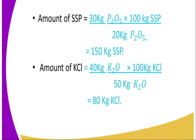To determine the amount of single superphosphate, take 30 kg of phosphorus pentoxide, multiply by 100 kg of single superphosphate fertilizer, then divide by 20 kg of phosphorus pentoxide — giving an answer of 150 kg of single superphosphate fertilizer to be applied. Then for muriate of potash: take 40 kg of potassium oxide, multiply by 100 kg of muriate of potash, then divide by 50 kg of potassium oxide — giving an answer of 80 kg of potassium chloride, meaning you are required to apply 80 kg of muriate of potash.